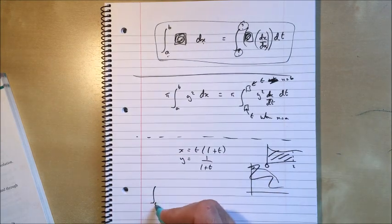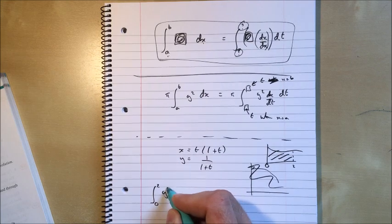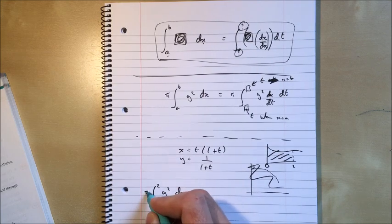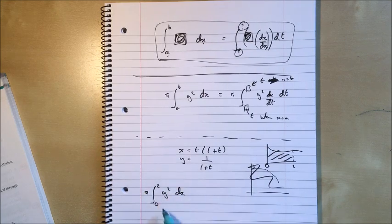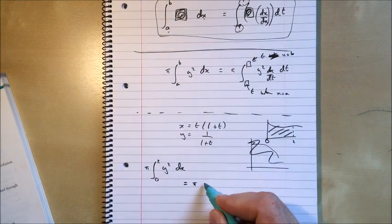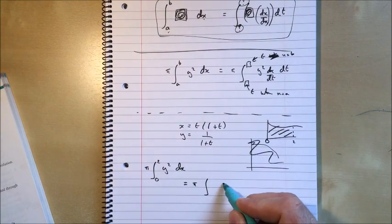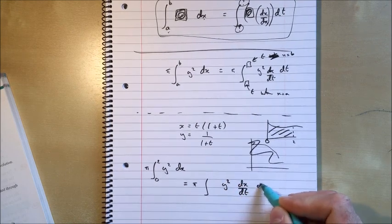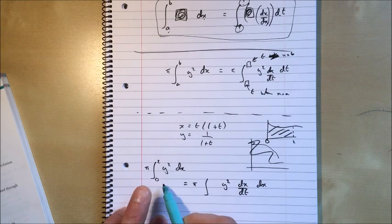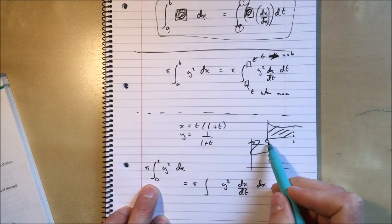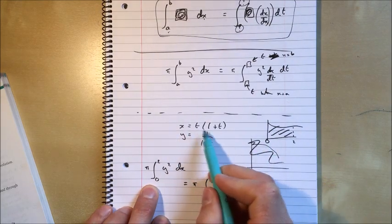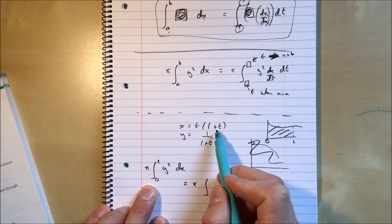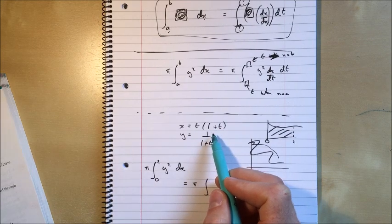So I need to find the integral from 0 to 2 of y squared with respect to x and then times the answer by pi. That's what I need to find. I use the fact that that is equal to pi times the integral of y squared dx/dt with respect to t. Now, when x equals 0, t equals 0 or t equals minus 1? So which one are we going to use?